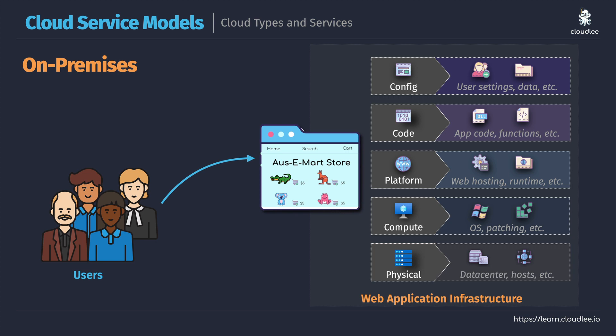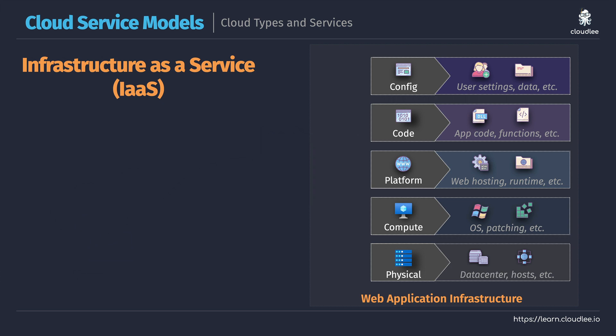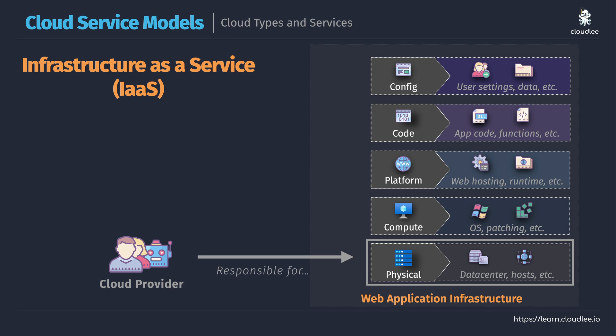Whatever sort of service you are hosting, there's a range of different layers to manage when providing functionality on-premises. But what does that look like in the cloud? This depends on the type of service you are using. When you use the cloud, you could use a service categorized as Infrastructure as a Service, or IaaS for short. What that means is it's the cloud provider who is going to manage that bottom layer.